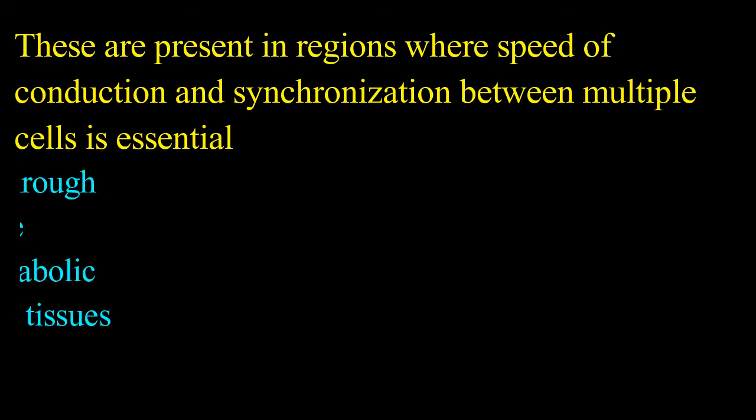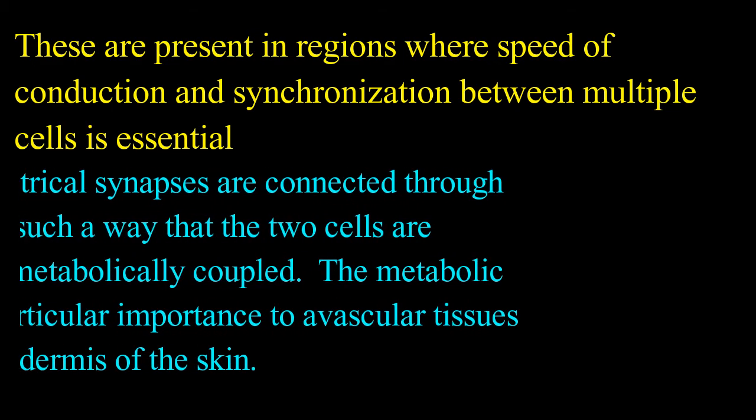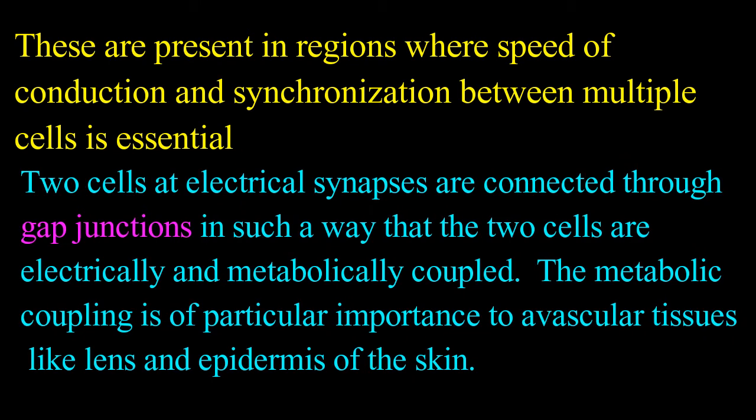The two cells at electrical synapses are connected through gap junctions in such a way that the two cells are electrically and metabolically coupled. The metabolic coupling is of particular importance to avascular tissues like lens and epidermis of the skin.